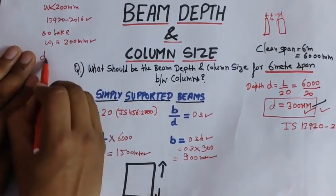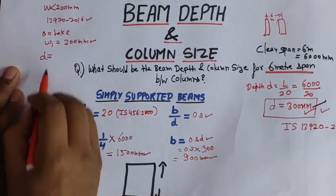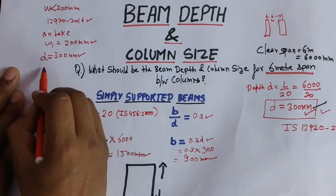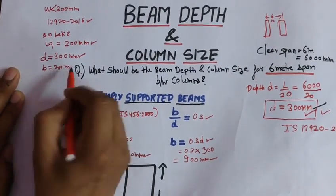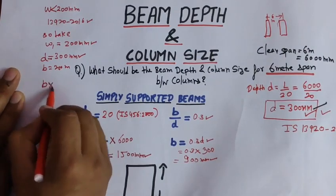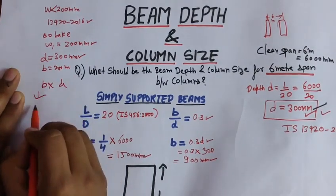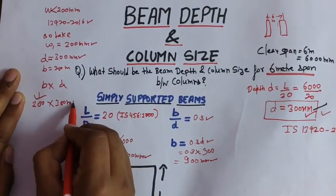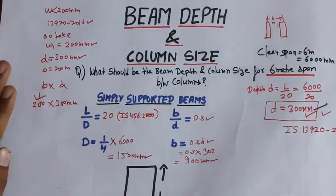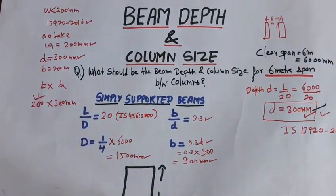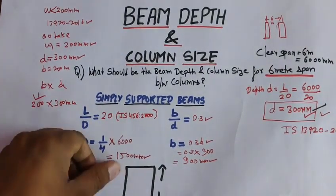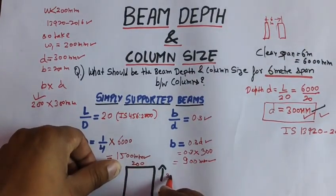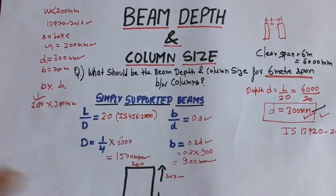So depth is 300 mm and breadth is 200 mm. If we plot this section, the width is 200 mm and the depth is 300 mm.